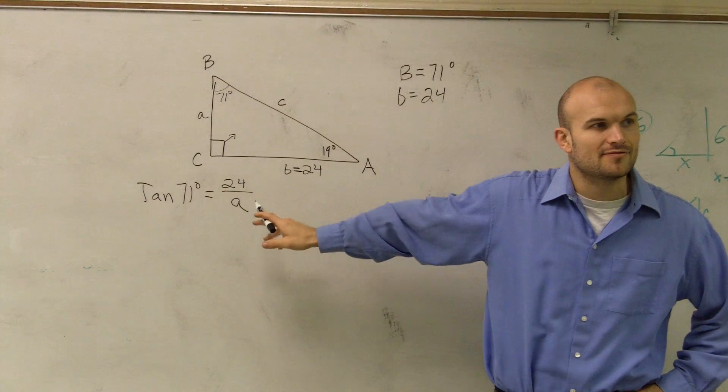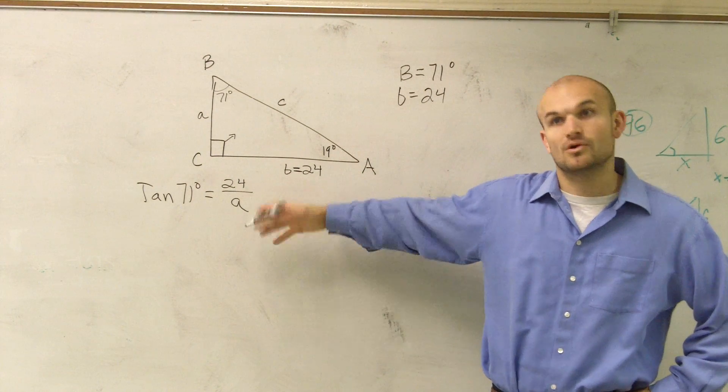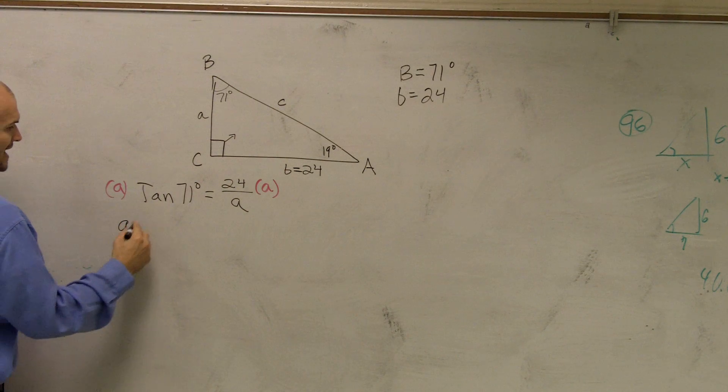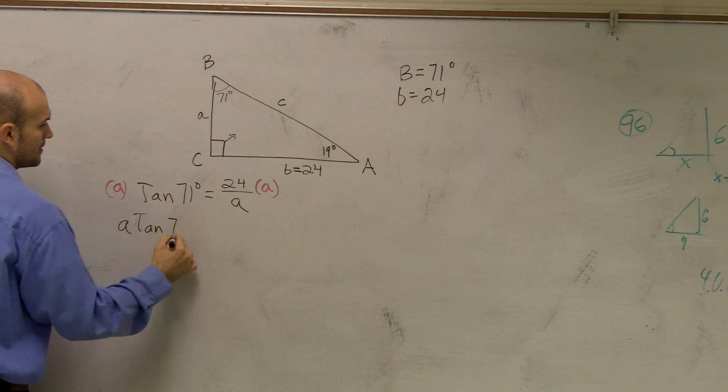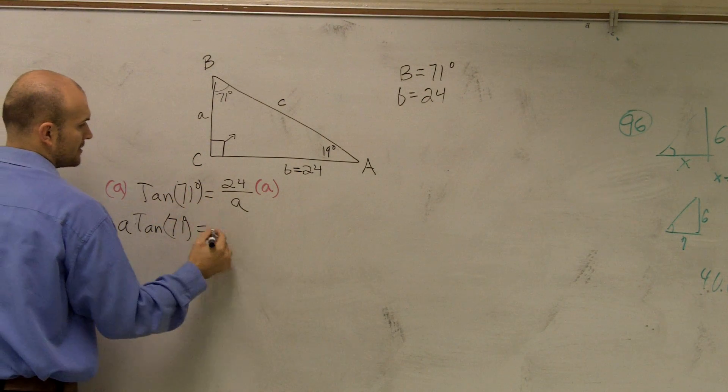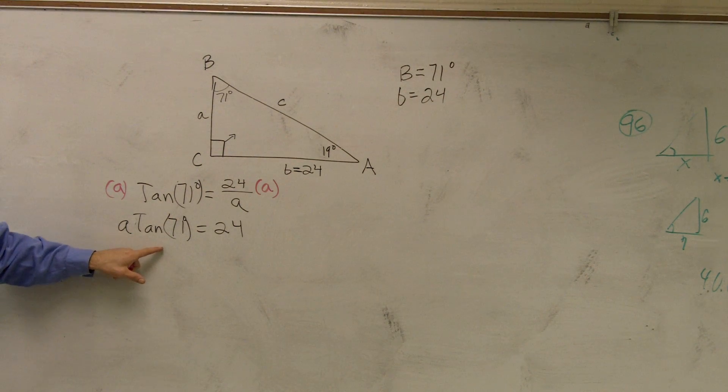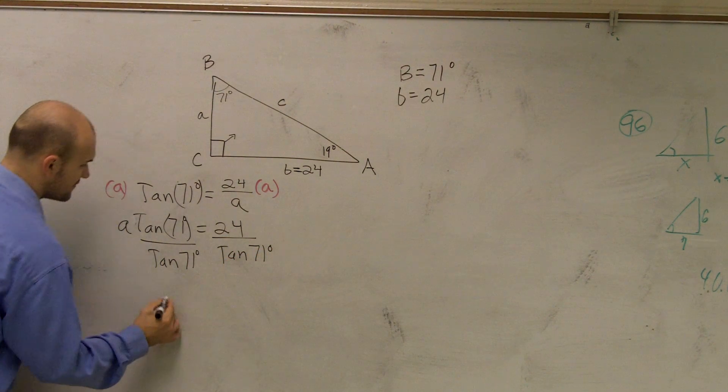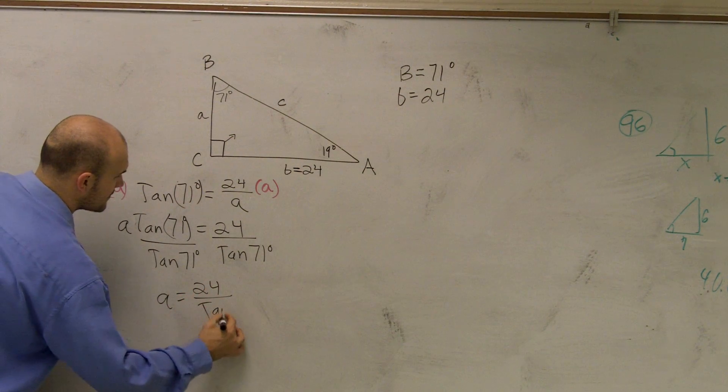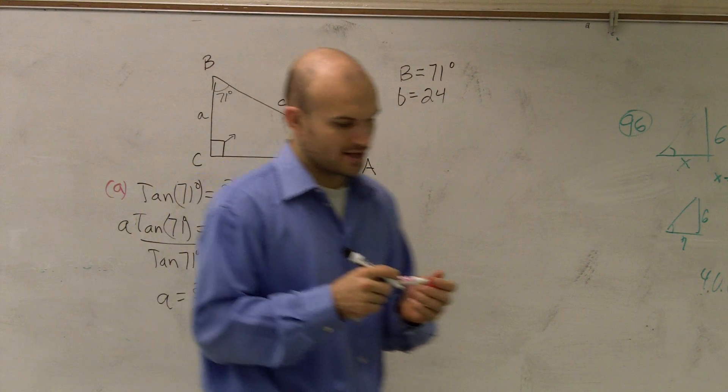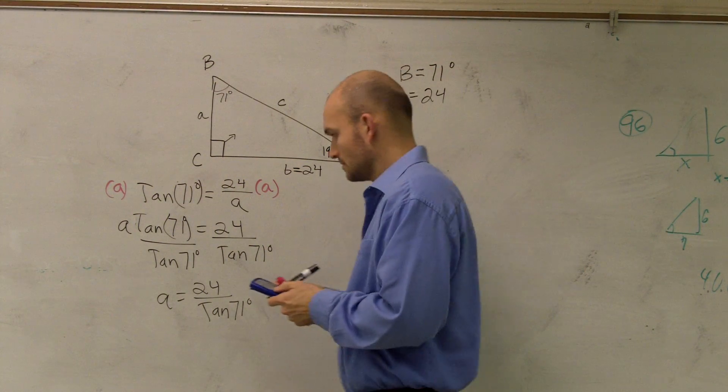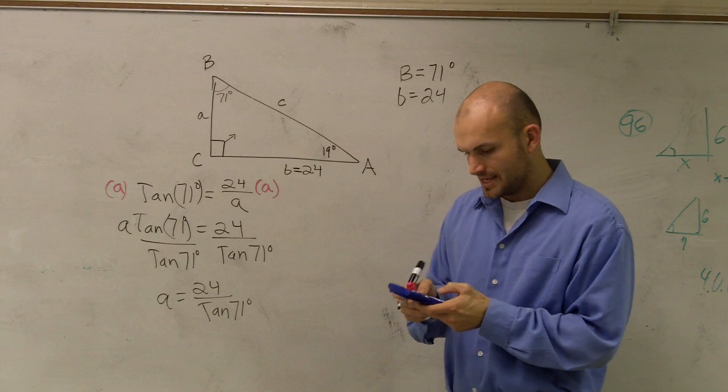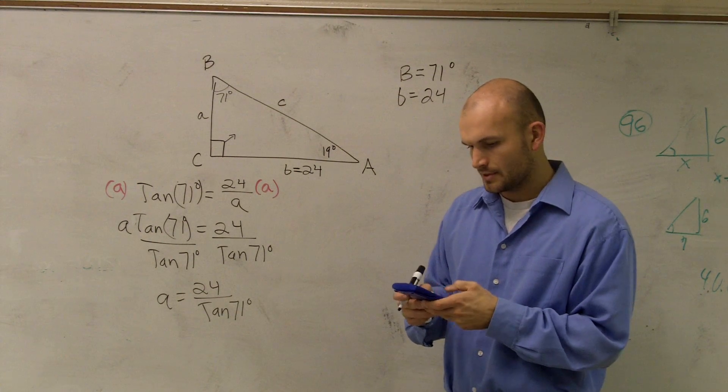So now, how do I solve for a value when my variable is on the bottom? Well, first I have to get it off the bottom. So let's multiply by A on both sides. So therefore, I'm left with A tan of 71 degrees equals 24. Now, we're just going to treat this like a term and divide. So I'll divide by tangent of 71 degrees. So therefore, A equals 24 divided by tan of 71 degrees. So let's take our calculator, and just make sure my degree is correct. So I'll just do 24 divided by tangent of 71, and I get 8.26.